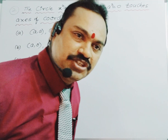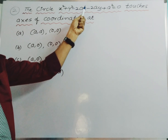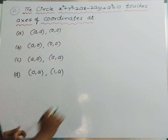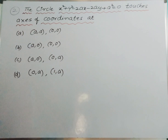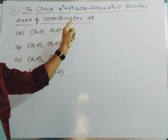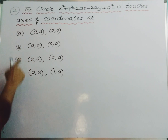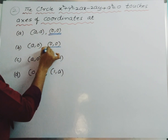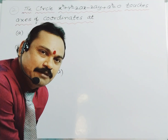Let's move on to our second question. The circle x² + y² - 2ax - 2ay + a² = 0. This circle touches the axis of coordinates at which points? If you observe the four options, in the first two options there is an origin. If a circle passes through the origin, the constant term remains 0.